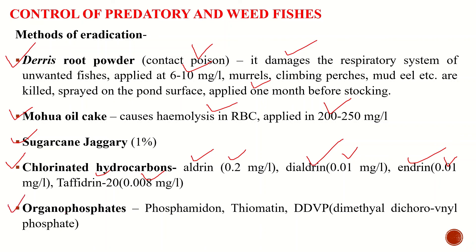Lastly, we can also use some organophosphates as fish poisons, like phosphamidon, thiometon, and DDVP — that is dimethyl dichlorovinyl phosphate. These are chemicals which can also be used as fish poison for the eradication of unwanted predatory and weed fishes from culturable ponds. So these are the methods for eradication of predatory and weed fishes.